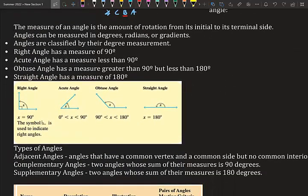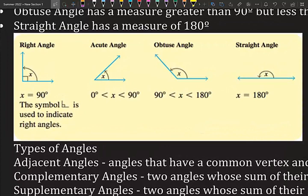The measure of an angle is the amount of rotation from its initial side to its terminal side. Angles can be measured in degrees, radians, and gradients. Right angles have a measure of 90 degrees. Acute angles have a measure less than 90 degrees. Obtuse angles have a measure greater than 90 but less than 180 degrees. Straight angles have a measure of 180 degrees and look like a straight line.